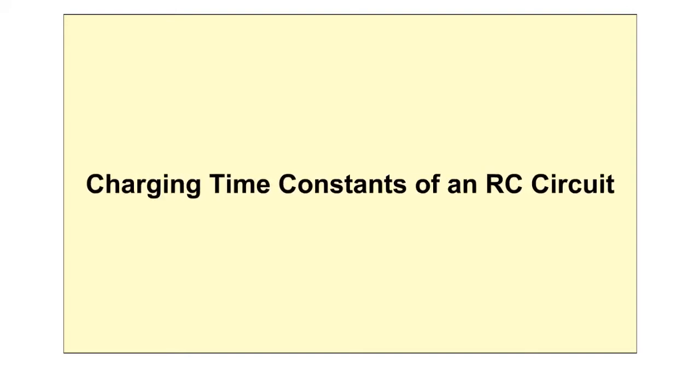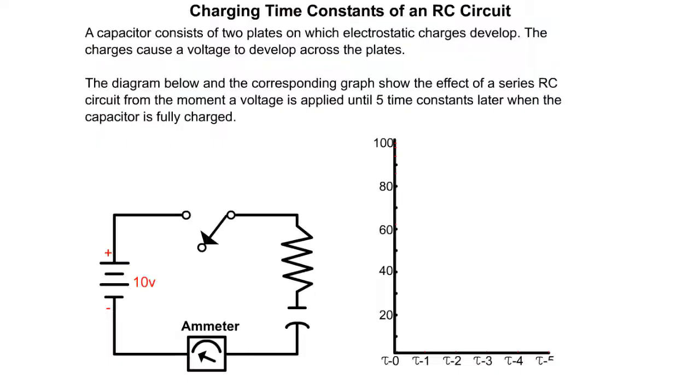Charging time constants of an RC circuit. A capacitor consists of two plates on which electrostatic charges develop. The charges cause a voltage to develop across the plates.